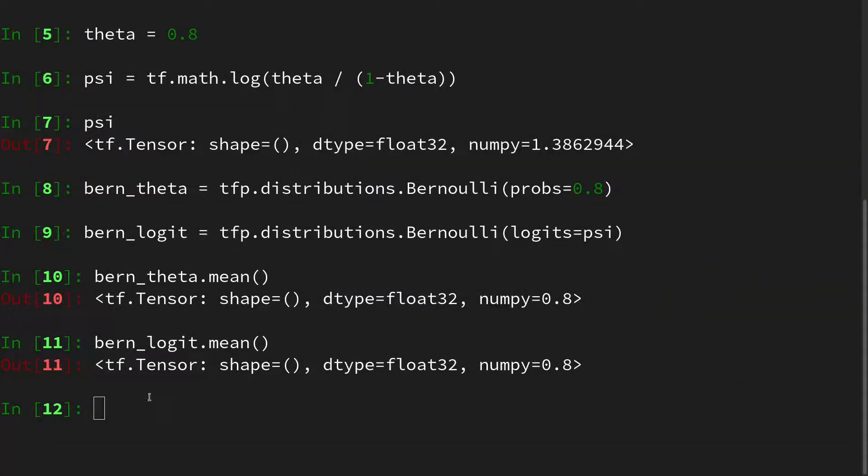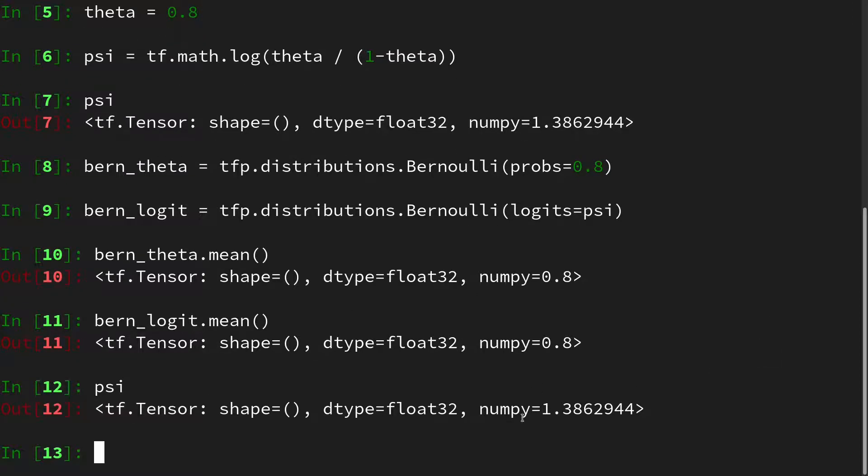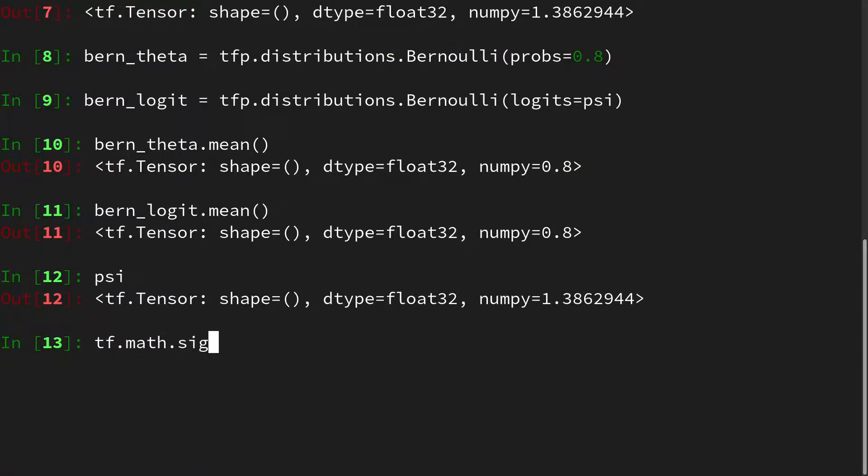For the record, let us also check if we can go back from the psi to the theta. The psi was 1.386, and we can apply the sigmoid using tf.math.sigmoid with the psi. And here we go, it is 0.8. So we can map from probabilities to logits and back, and we can define Bernoulli distributions either by logit or by probability.